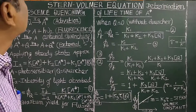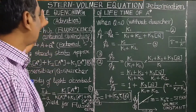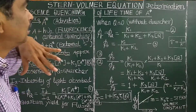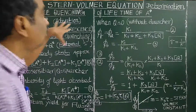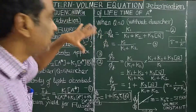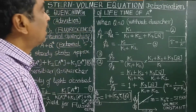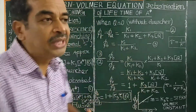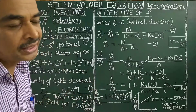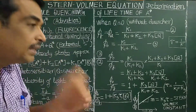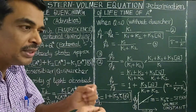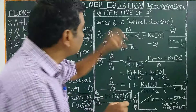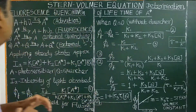Good morning. Today we will see the Stern-Walmer equation — how it is derived — and we will see the determination of lifetime of the excited state species: how long the excited state species spends in the excited state. That is the lifetime.